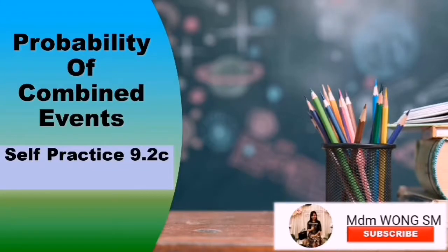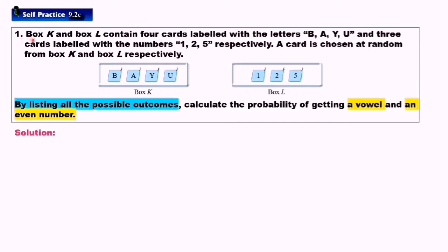Probability of Combined Events Self-Practice 9.2C. Question number 1. Box K and Box L contain 4 cards labelled with the letters B, A, Y, U and 3 cards labelled with the numbers 1, 2, 5 respectively. A card is chosen at random from Box K and Box L respectively. By listing all the possible outcomes, calculate the probability of getting a vowel and an even number.